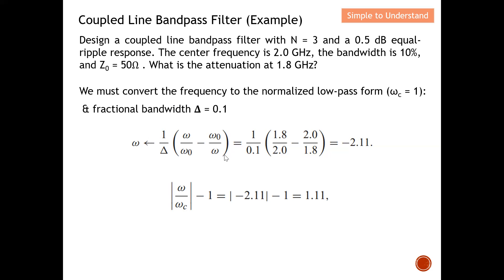There is a set of formulas to convert the frequency to the normalized low-pass form. The variable Ω represents the normalized frequency — here we substitute 1.8 GHz into the formula. The quantity ω₀ is the center frequency, which is 2 GHz for this bandpass filter (for a low-pass filter it would be the cutoff frequency). So we have 1.8 and 2 in the expression.